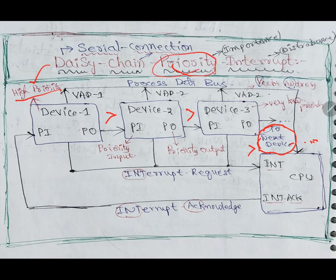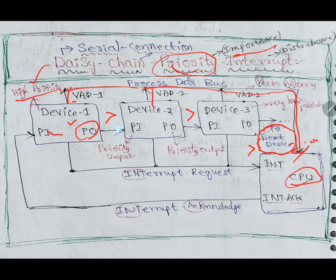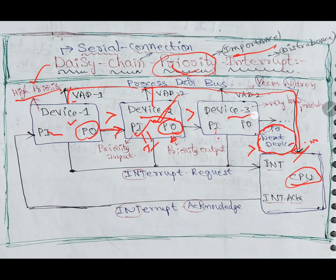According to priority, the CPU time will be assigned. The priority input sends a signal to the priority output, then that device's work will be done. VAD — vector address — will be placed in scalar sequence-wise address and connected to the CPU. Next, device two will be activated — the next priority device. When device two's work is done, for example a printer or any other device, it sends a signal. When priority input equals one and the other equals zero, the signal is passed on to the third device.